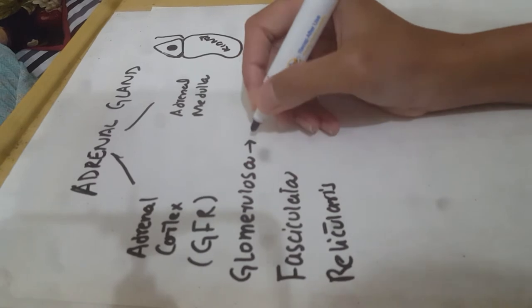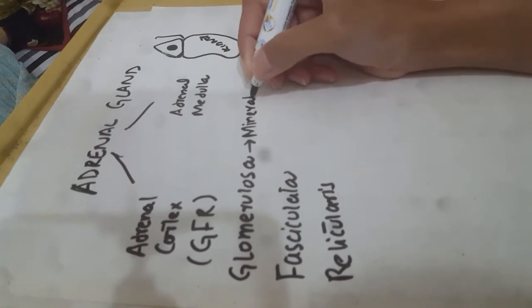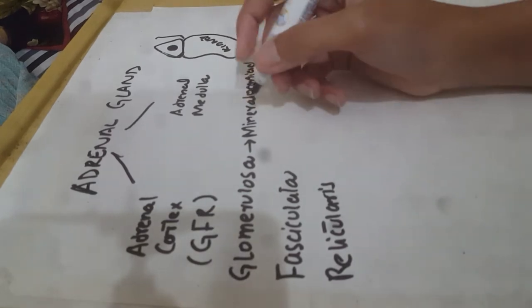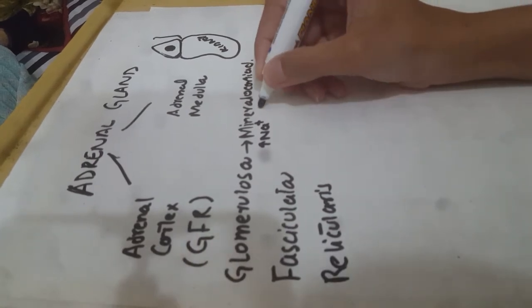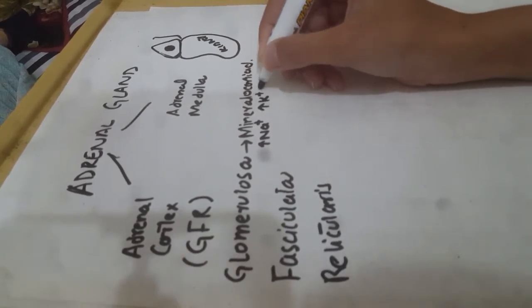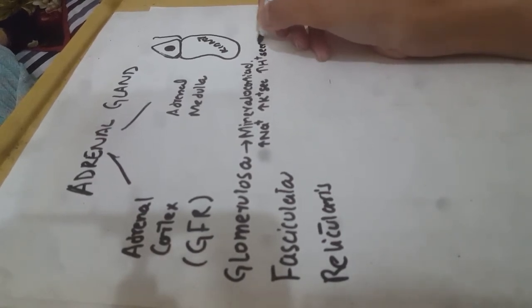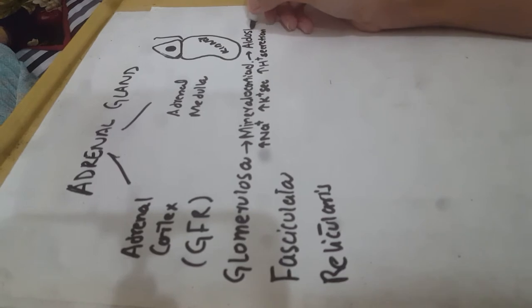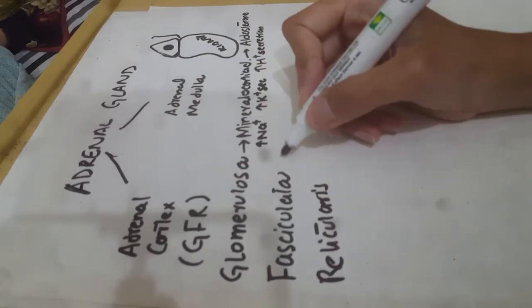First is the zona glomerulosa — it will secrete mineralocorticoids. Its function is to maintain the balance in the body: increased sodium resorption, increased potassium secretion from the kidney, and increased hydrogen secretion. The hormone secreted is aldosterone.